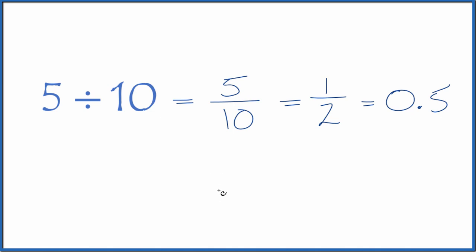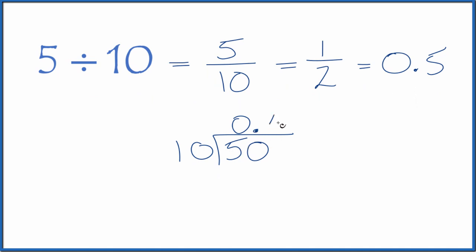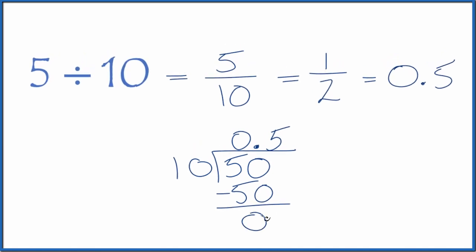We can do this longhand as well. We could take 5 and see how many times 10 goes into 5. It doesn't go into 5. Let's call this 50 and put a 0 with a point up here. Now 5 times 10, that's 50. We subtract, no remainder.